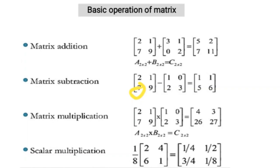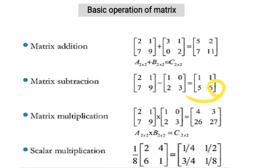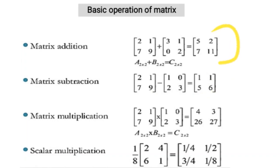The first element of the second row: 7 minus 2 equals 5. The second element of the second row: 9 minus 3 equals 6. So just like matrix addition, matrix subtraction follows the same basic element-wise principle.